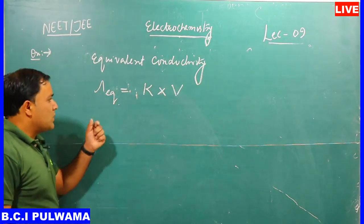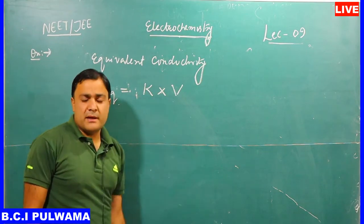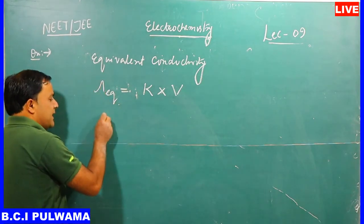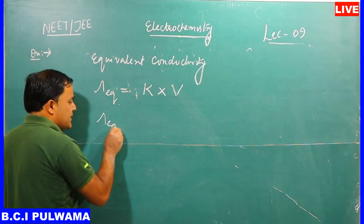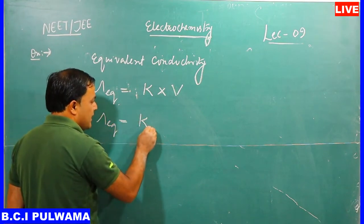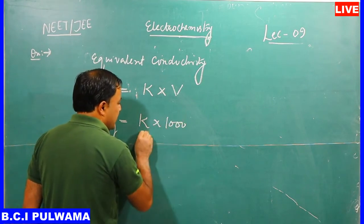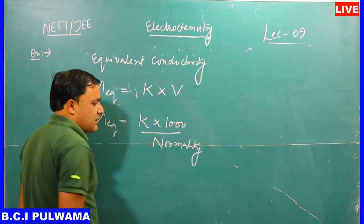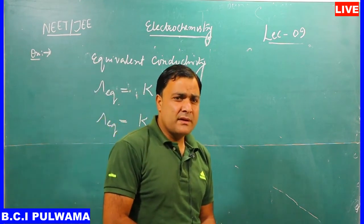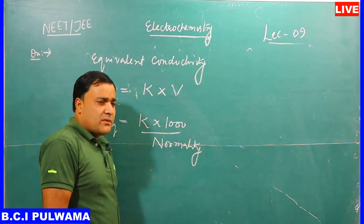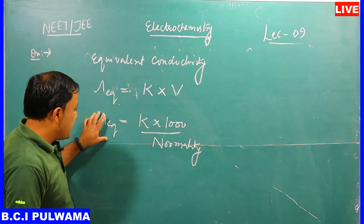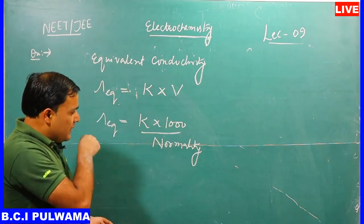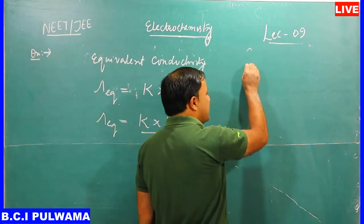Mathematically, equivalent conductivity is equal to the value of conductivity multiplied by the volume containing one gram equivalent of an electrolyte. The expression is: λ_eq = κ × 1000 / normality, in the case of an electrolytic solution where concentration is c gram equivalents dissolved in one litre.